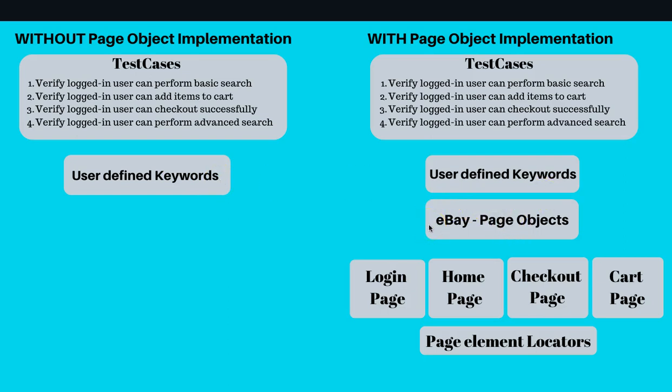When we talk about page objects, a page object will be a class in which we define the basic functionality. For example, you have the login page, home page, checkout page, cart page, or navigation bar. On eBay or Amazon, the navigation bar remains static across most pages, so it makes logical sense to create one page object for that navigation bar because it's common across multiple pages and its functionality can be reused in multiple test cases.